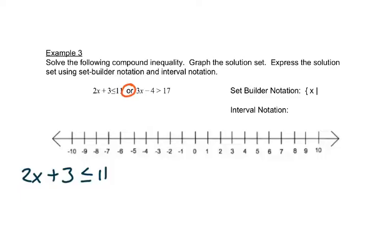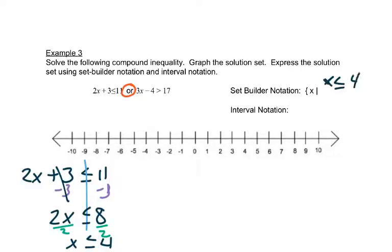So we have 2x plus 3 is less than or equal to 11. We'll subtract 3 from both sides. 11 minus 3 is 8. And then we'll divide both sides by 2. It's a positive 2, so the sign doesn't change. And we get x is less than or equal to 4. So that would be the first part of our set builder notation.